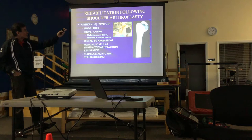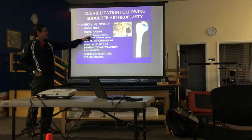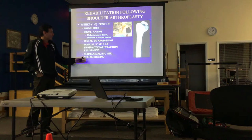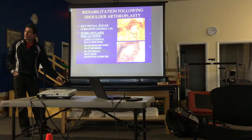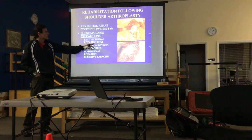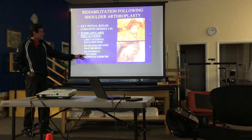Weeks one through six: passive range of motion progressing to active assistive range of motion. There are typically no limitations in flexion, abduction, or internal rotation. Manual scapular stabilization and submaximal external rotation strengthening are appropriate because nothing is usually harmed on the external rotators — it's just the anterior structures. The most important restriction: limit external rotation range of motion, typically no ER beyond 30 to 45 degrees, and no internal rotation resistive exercise, all to protect the subscapularis.